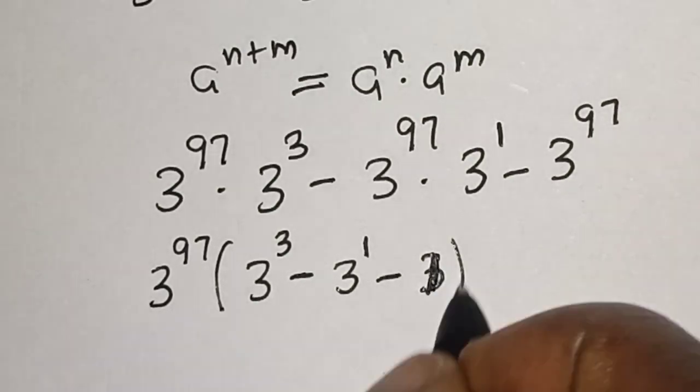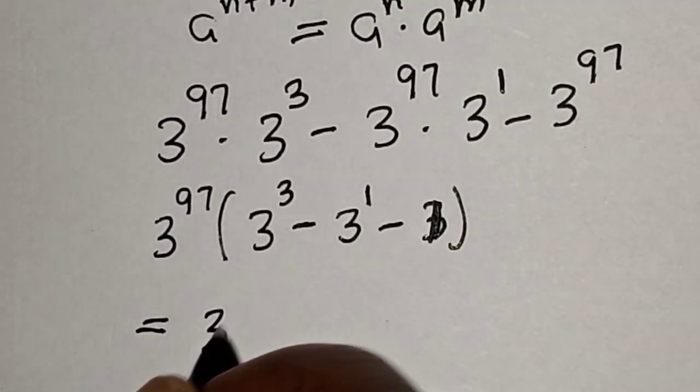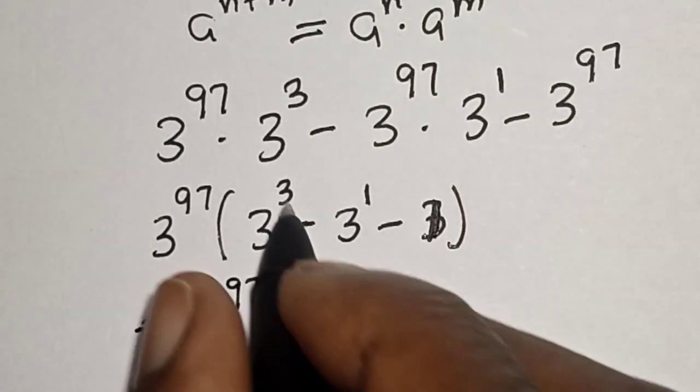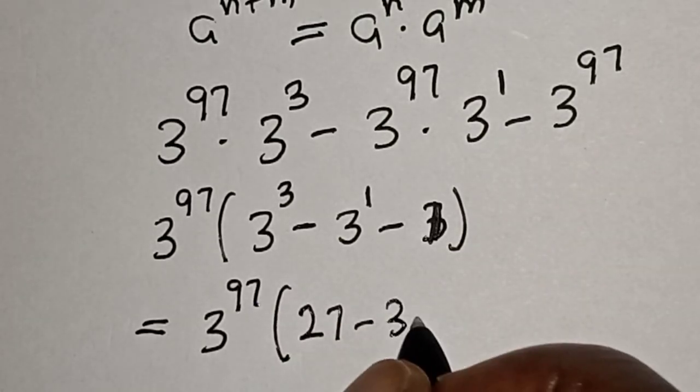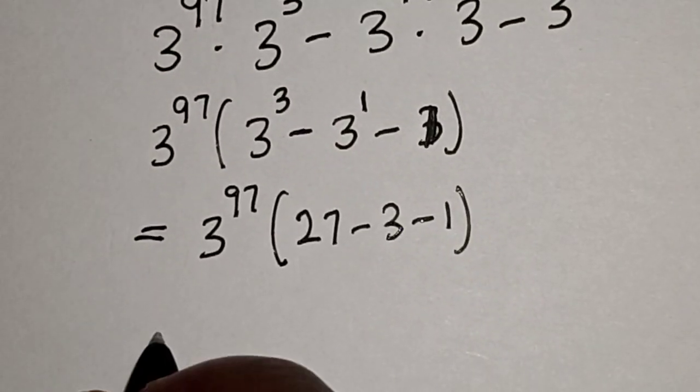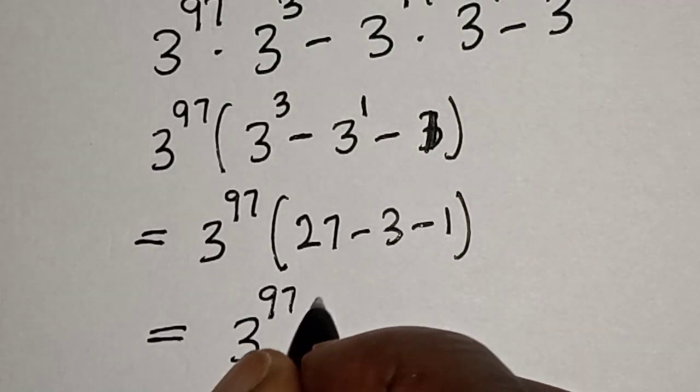Because 3 to the power 97 divided by 3 to the power 97 is 1. Then this is equal to 3 to the power 97 brackets, 3 to the power 3 that is 27, minus 3 to the power 1 that is 3, minus 1.